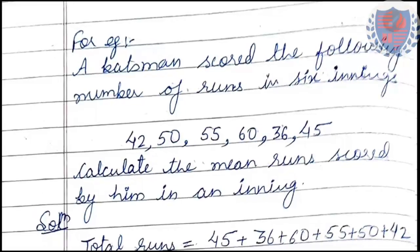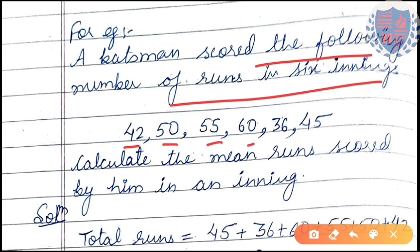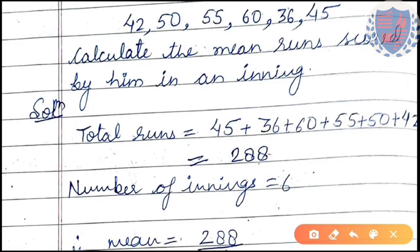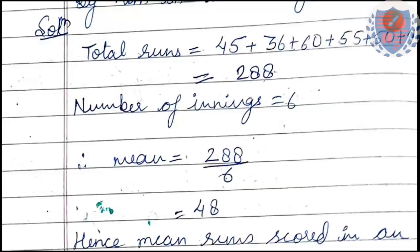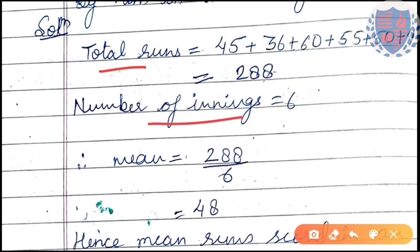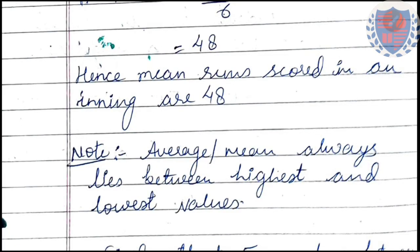For example, a batsman scored the following runs in six innings: 42, 50, 55, 60, 36, and 45. We need to calculate the mean runs scored in an inning. The total runs scored — adding all of them — gives us 288. There are six innings, so the mean will be 288 divided by 6, which equals 48. Hence, mean runs scored in an inning are 48.